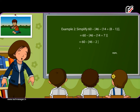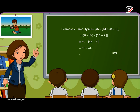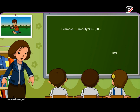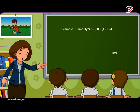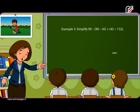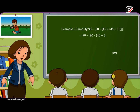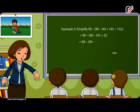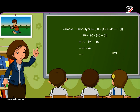Example 3: Simplify 90 minus [90 minus {45 plus (45 ÷ 15)}]. Step 1: Solve simple bracket: 45 ÷ 15 = 3. Step 2: Solve curly bracket: 45 plus 3 = 48. Step 3: Solve big bracket: 90 minus 48 = 42. Result: 90 minus 42 is equal to 48.